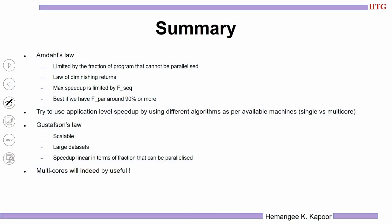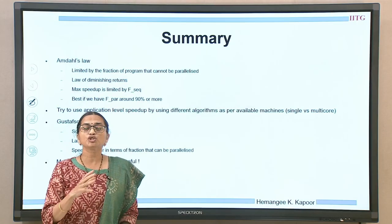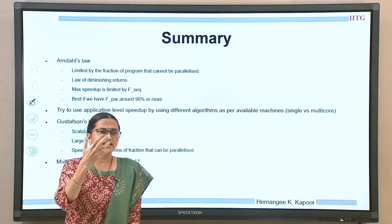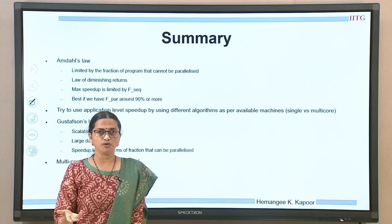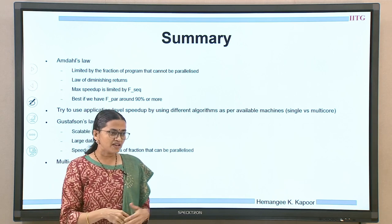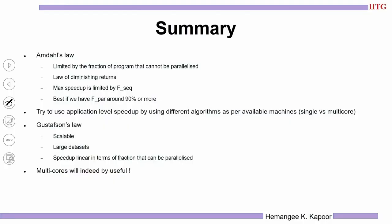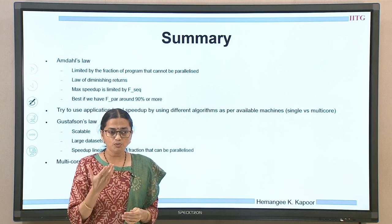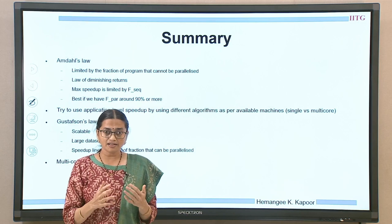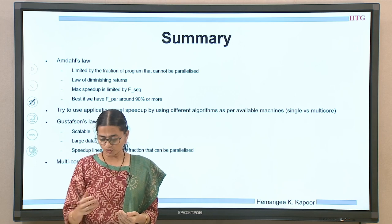To summarize: we have looked at Amdahl's law which said the speedup you can achieve is limited by the fraction you cannot parallelize. We should try to use applications and algorithms which suit the given architecture — for unicores one algorithm could be good but you can design a newer algorithm when you move to a multicore system. Gustafson's law said that we can have scalable designs with multicore — have a parallel portion divided across multiple things, use larger data sets, work on complex problems. If we exploit this concept you will get a speedup which is linear with the number of cores, and this is good news because it says multi-cores will indeed be useful.